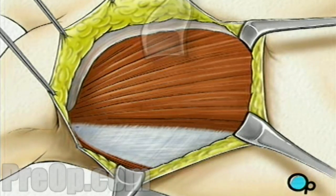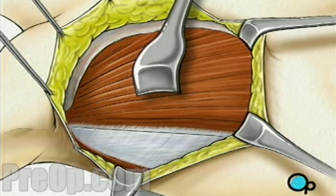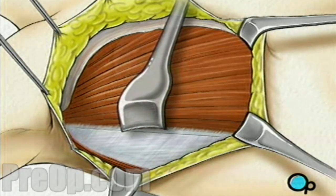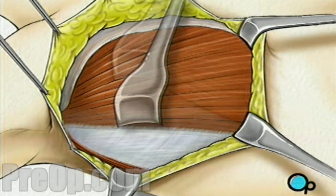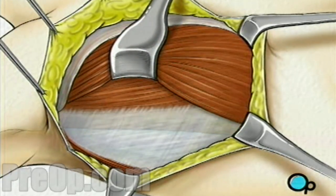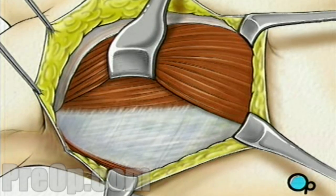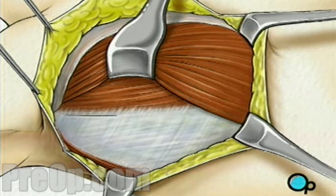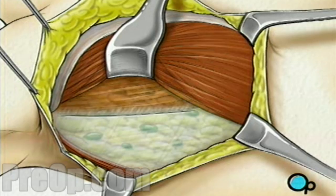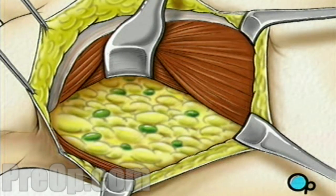The surgeon will pull this muscle temporarily aside, exposing the next layer of muscle, the pectoralis minor. The surgeon will move this muscle aside as well, creating a clear view of the surrounding fatty tissue. Within this fat deposit lie lymph nodes, lymph vessels, blood vessels, and nerves.